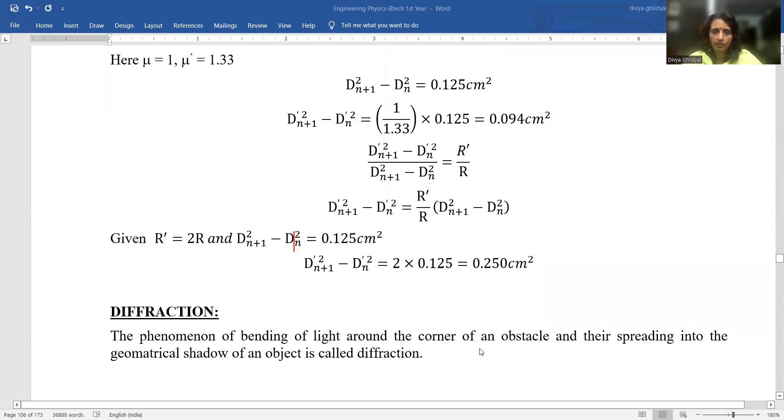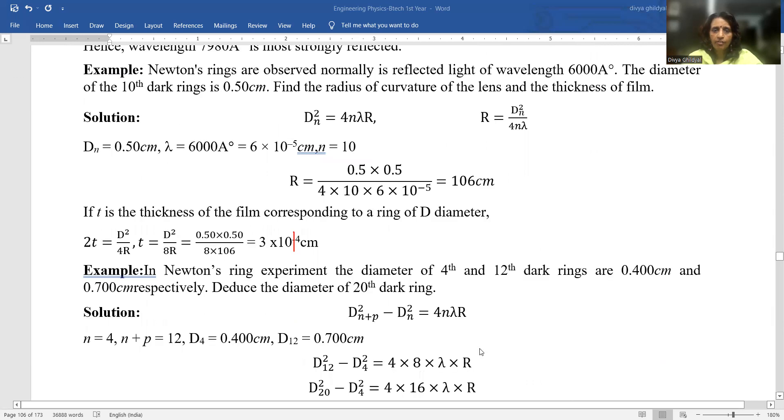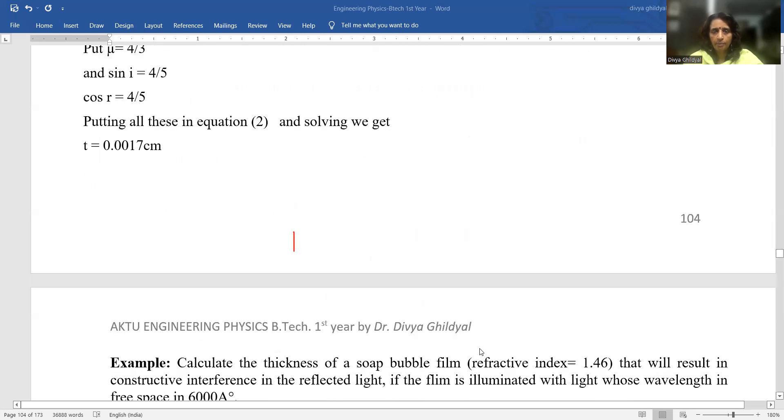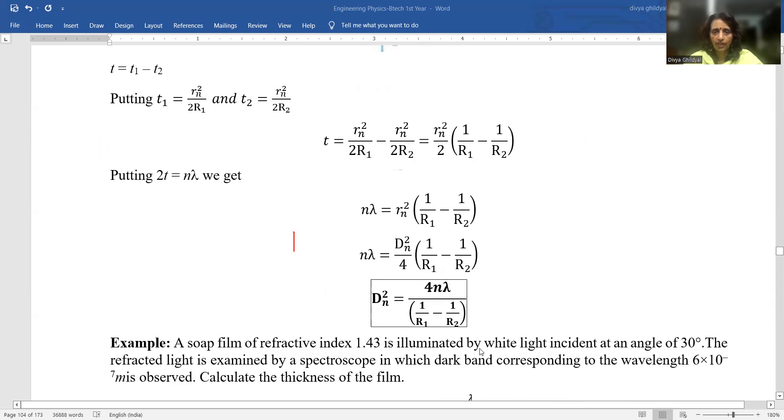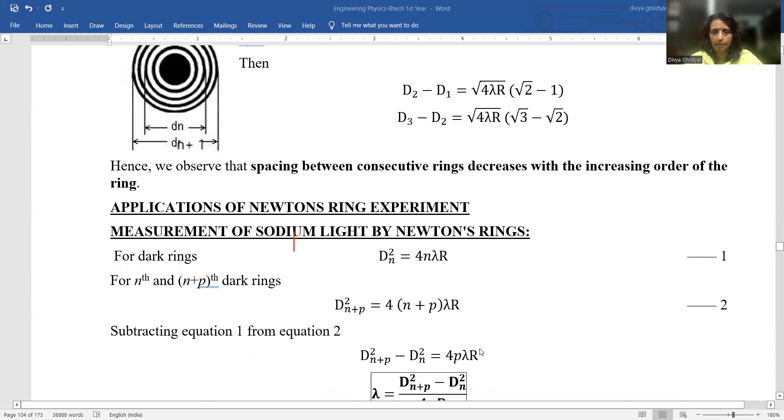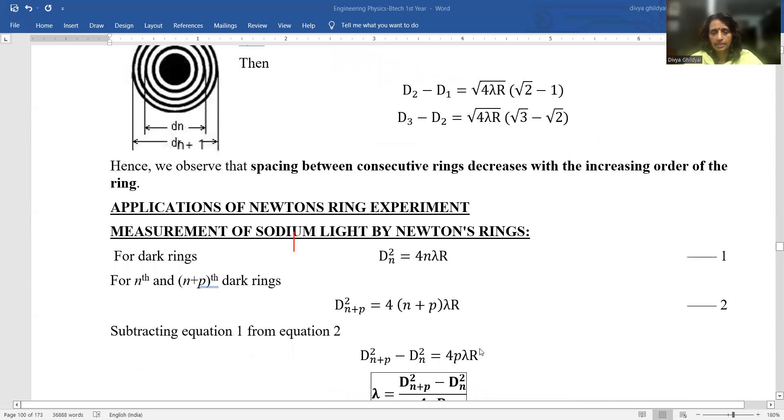What did we study? We began by coherent sources derived from the same source. Interference in thin film path difference formula for reflected light is 2μT cos R + λ/2 for transmitted light.